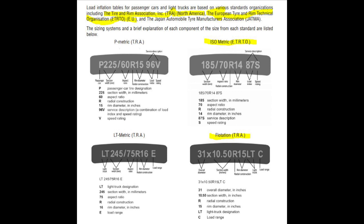The American system covers the other three categories: passenger car, light truck, and flotation — each with different charts. The Europeans use one chart and go by the load index.